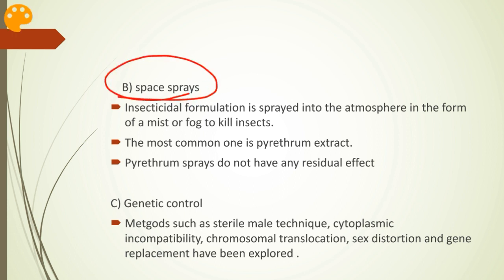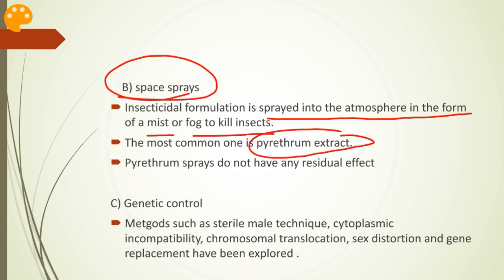Coming to space sprays: an insecticidal formulation is sprayed into the atmosphere in the form of mist or fog to kill insects. The most common one used is pyrethrum extract, which is an extract of pyrethrum flowers and an excellent space spray. The mechanism of action of pyrethrum is that it acts as a knock-down poison — the active principle kills insects instantly on mere contact. Doors and windows are kept closed for half an hour after spraying. Pyrethrum sprays do not have any residual effect, so they are temporary. Other space sprays used include residual insecticides such as fenitrothion for ULV fogging.